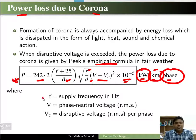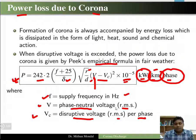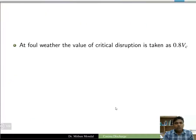Here, f is the supply frequency in hertz, V is the phase-to-neutral voltage (RMS value), and Vc is the disruptive voltage, which is the RMS value per phase. This empirical formula is used to calculate power loss due to corona.